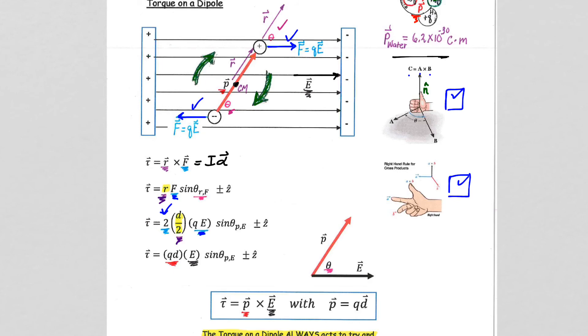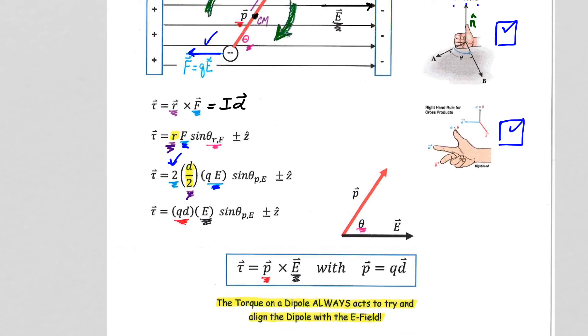R cross F from a common origin gives us a pink angle theta here. When we see how our variables play out, we get QD. Torque has QD in it. That's the vector P.